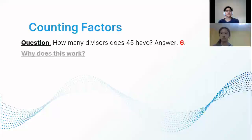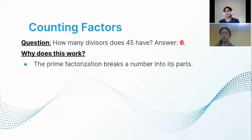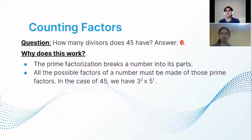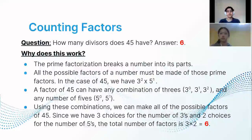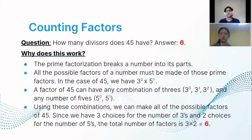Why does this work? The prime factorization breaks the number into its parts, and all possible factors are made of those prime factors. For 45 = 3² × 5¹, any factor can have 3⁰, 3¹, or 3² — three choices — and 5⁰ or 5¹ — two choices. You multiply 3 × 2 because you can have 3⁰×5⁰, 3⁰×5¹, 3¹×5⁰, 3¹×5¹, 3²×5⁰, or 3²×5¹. That gives six options — that's why it works.